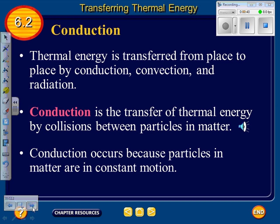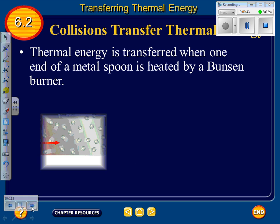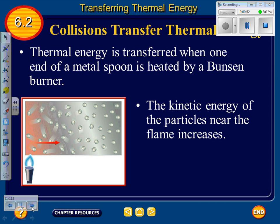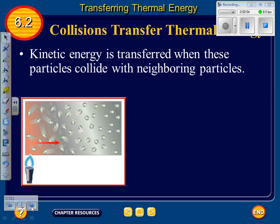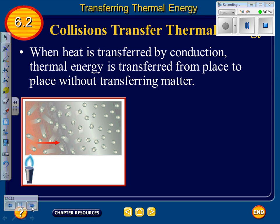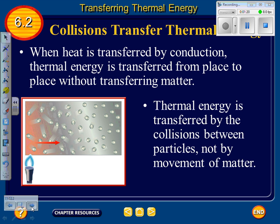Conduction occurs because particles in matter are in constant motion. Thermal energy is transferred when one end of a metal spoon is heated by a Bunsen burner. The kinetic energy of the particles near the flame increases. Kinetic energy is transferred when these particles collide with neighboring particles, and thermal energy is transferred from one end of the spoon to the other. Heat transferred by conduction moves from place to place without transferring matter — only collisions between particles transfer it.